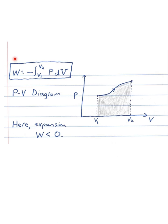Work is the negative integral from V1 to V2 of P dV. Now I'll introduce a very useful tool in thermodynamics: a PV diagram — a graph of pressure versus volume, with volume always on the horizontal axis and pressure on the vertical axis. Let's say the gas goes through a change where it increases in both pressure and volume. The work done is the integral of that function — it's the area under the curve, shaded in gray. Here the gas is expanding from V1 to V2 (arrow going left to right), so work is negative.